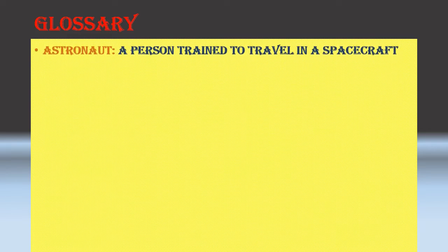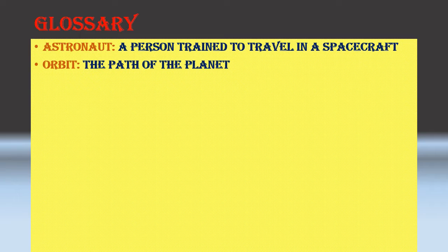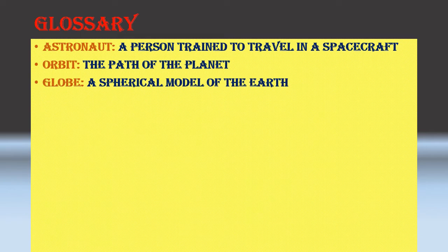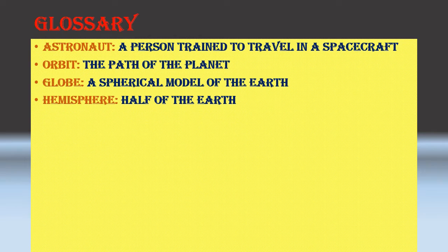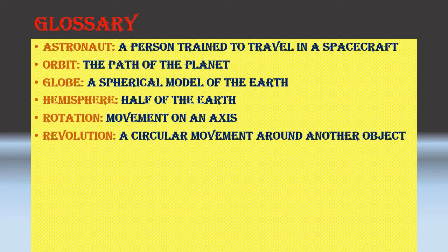These are just the meanings — we will get into further details afterwards. Astronaut: a person trained to travel in a spacecraft. Orbit: the path of the planet. Globe: a spherical model of the earth. Hemisphere: half of the earth. Rotation: movement on an axis. Revolution: a circular movement around another object.